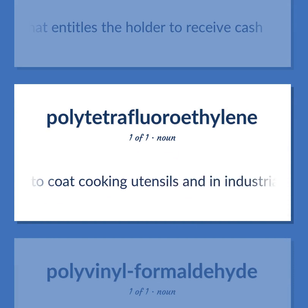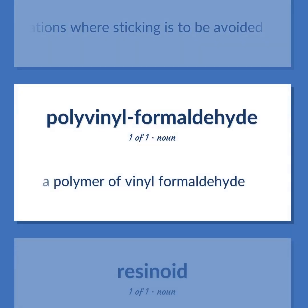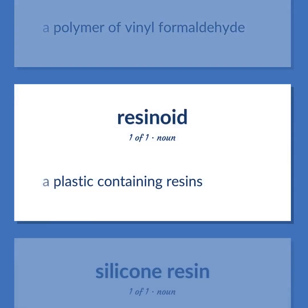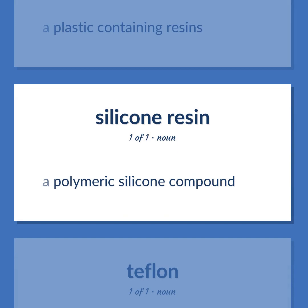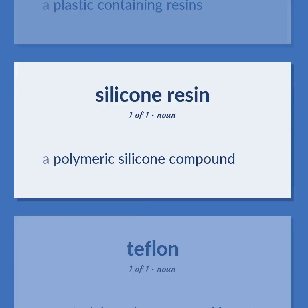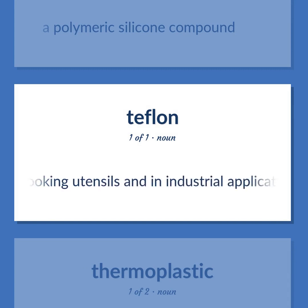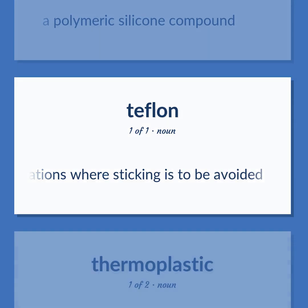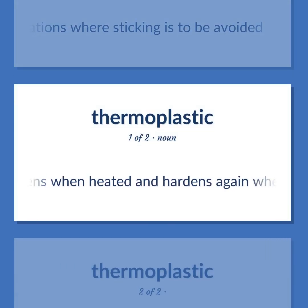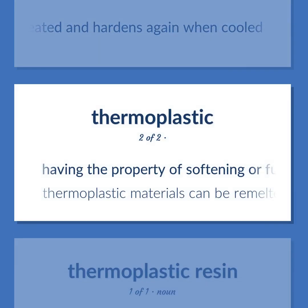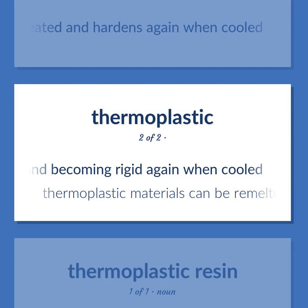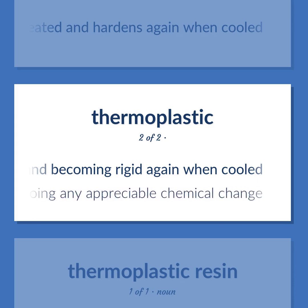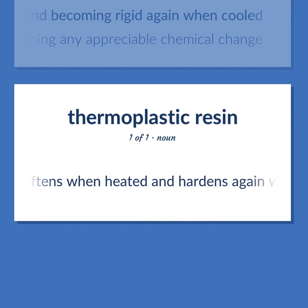Thermoplastic: A material used to coat cooking utensils and in industrial applications where sticking is to be avoided. A material that softens when heated and hardens again when cooled. Having the property of softening or fusing when heated and of hardening and becoming rigid again when cooled. Thermoplastic materials can be remelted and cooled time after time without undergoing any appreciable chemical change.